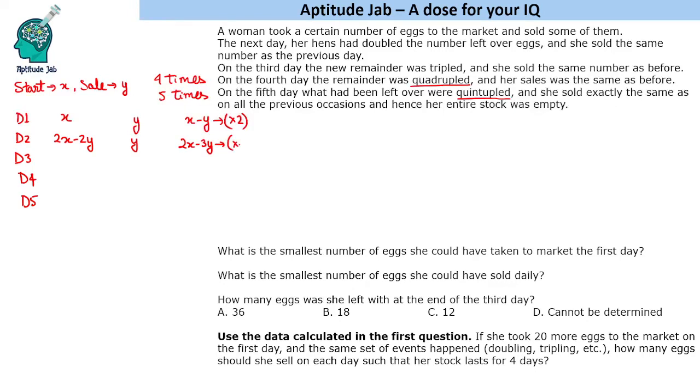Now this remainder becomes three times on the next day, so this will be 6x minus 9y. She sells y again and her remainder will be 6x minus 10y.